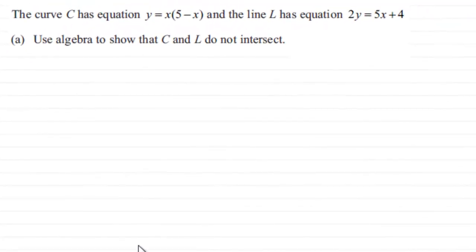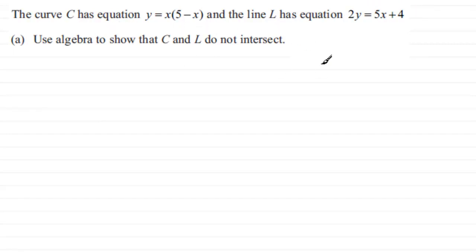Now this question: we're given that the curve C has equation y equals x multiplied by 5 minus x, and we've got a line L which has equation 2y equals 5x plus 4. We've got to use algebra to show that C and L do not intersect. This is an unusual question because normally you're asked to show where they do intersect, and we do that by simultaneous equations.